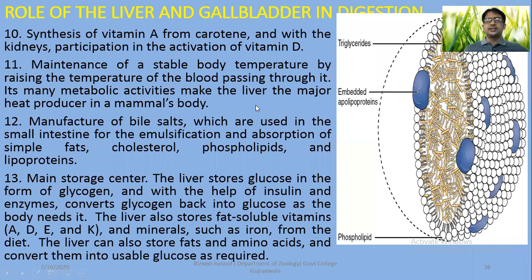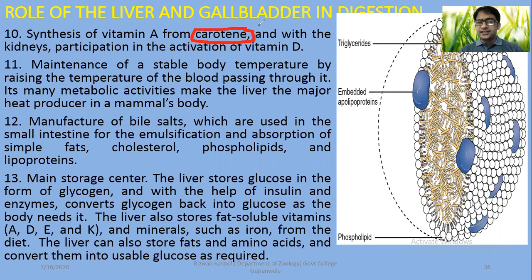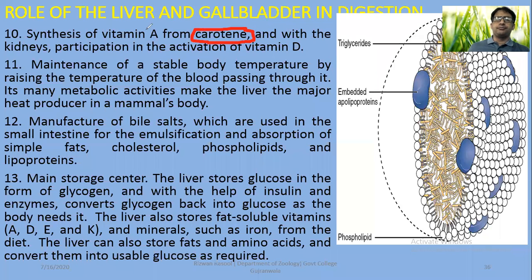Additional liver functions include: synthesis of vitamin A from carotenes, which are terpenoid lipid-like structures; participation with the kidneys in the activation of vitamin D, required for calcium absorption; maintenance of stable body temperature by raising the temperature of blood passing through it, as many metabolic activities make the liver the major heat producer in animals.